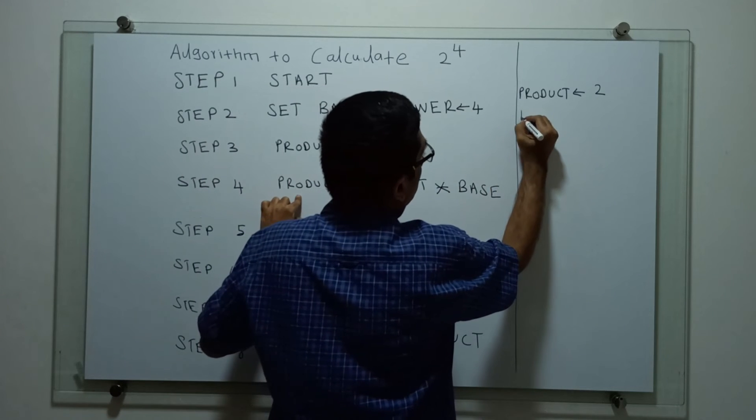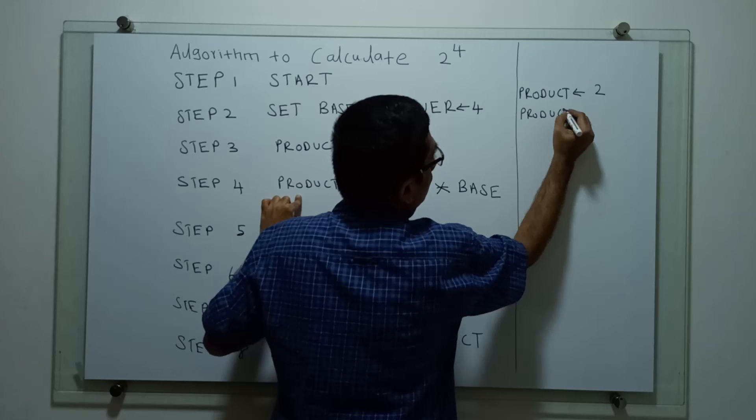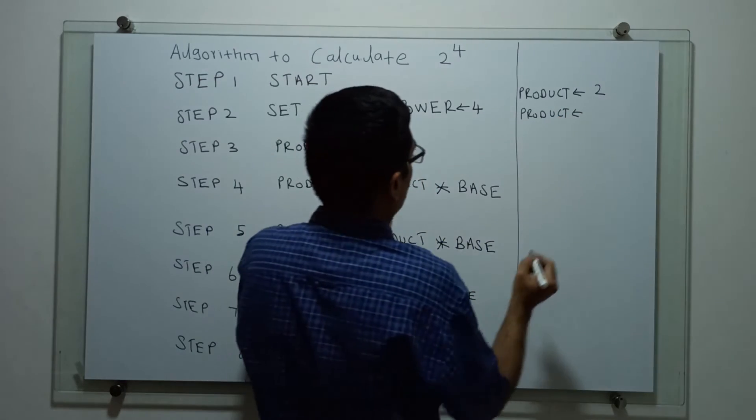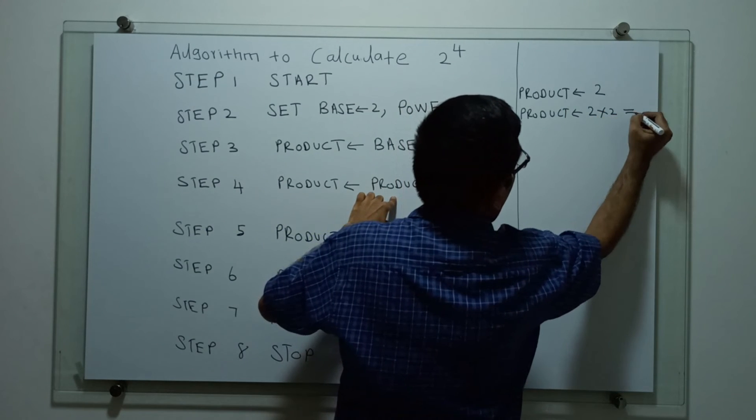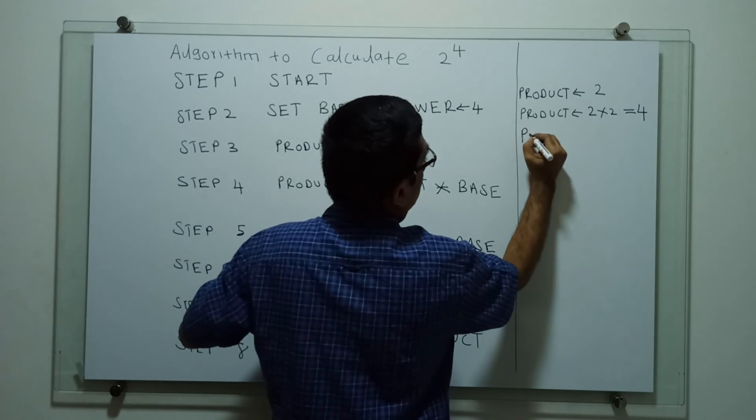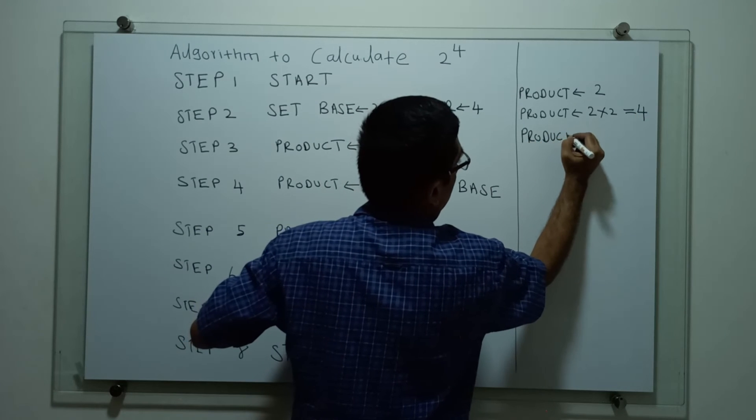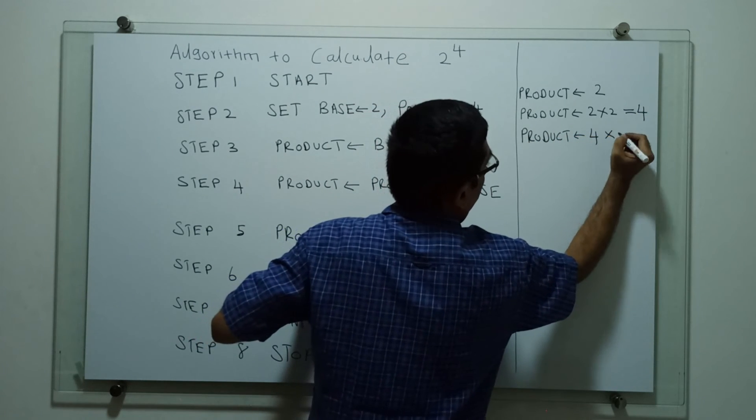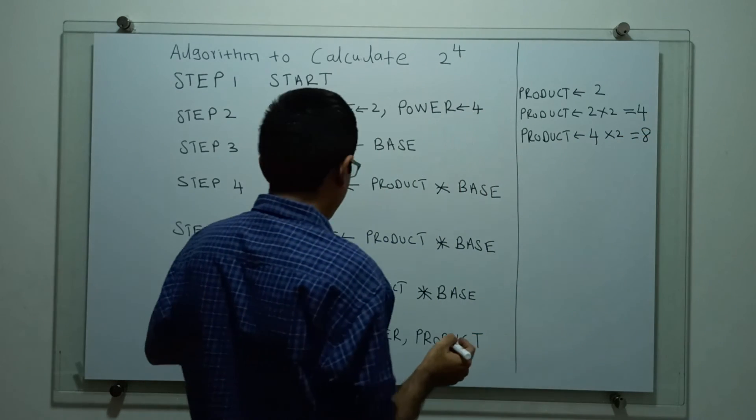Step 4, product equal to - so what is the existing value of product? 2 into 2 which is equal to 4. So next step, product equal to 4 into 2 which is equal to 8.